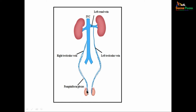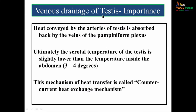The veins arising from the posterior border form the pampiniform plexus. As they travel, they condense first to four veins, then two, and finally one — on the right side opening into the IVC and on the left into the left renal vein. The heat conveyed by the arteries of the testes is absorbed back by the veins of the pampiniform plexus, keeping the scrotal temperature about three to four degrees lower than the abdominal temperature. This mechanism is called the counter-current heat exchange mechanism.